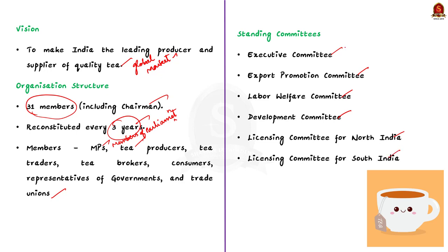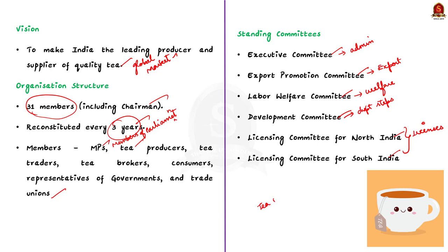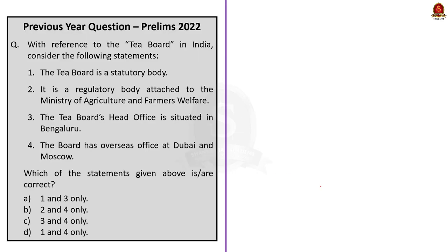The executive committee deals with administrative matters. The export promotion committee deals with export promotion. The labor welfare committee looks after the welfare of laborers. The development committee looks into various development steps taken by the Tea Board. And finally, the licensing committees issue licenses and act in accordance with directions of the executive committee. This is all regarding the Tea Board, its functions, and the six standing committees.